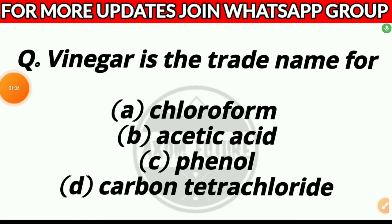Question 4. Vinegar is the trade name for: Option A, chloroform; Option B, acetic acid; Option C, phenyl; or Option D, carbon tetrachloride. Answer: Option B, acetic acid.